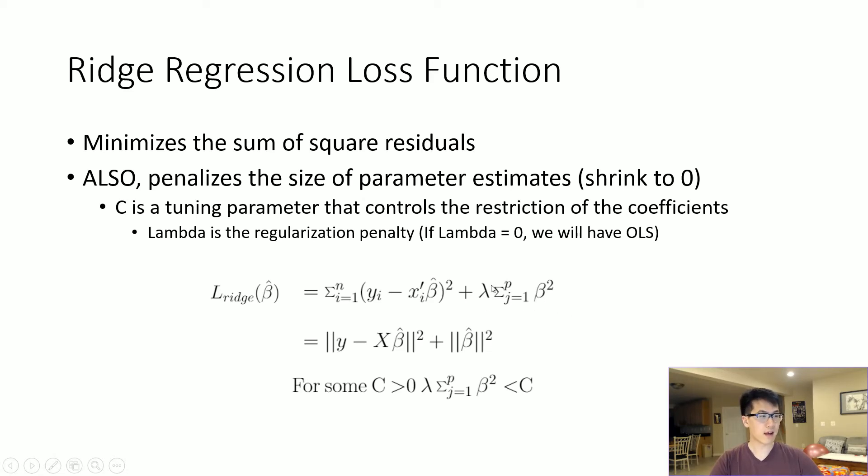But we have this specific regularization constraint. This is our lambda function, also called the Lagrange multiplier—a tuning parameter we can adjust. This adds a constraint to our overall model. We have the beta squares, and we sum all the true values together.